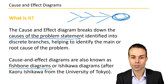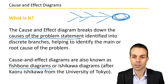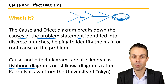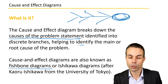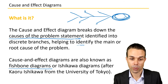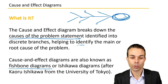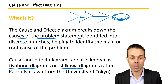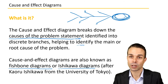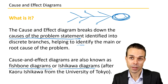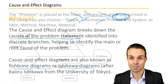All of these branches are our brainstorming branches that we break our problem down into, and they help identify the main or the root cause of a problem. It's also called an Ishikawa diagram after Keoru Ishikawa from the University of Tokyo, who basically invented this idea.